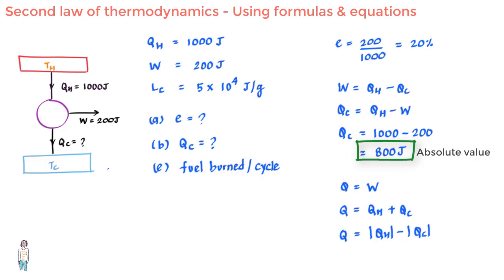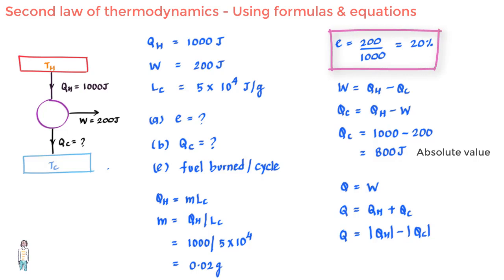So let us move on to the next part. Here in part C, if mass of fuel burned in every cycle is m, then QH equals m times LC. Then m equals QH upon LC, which is equal to 1000 divided by 5 times 10 to the power 4, which equals 0.02 grams.